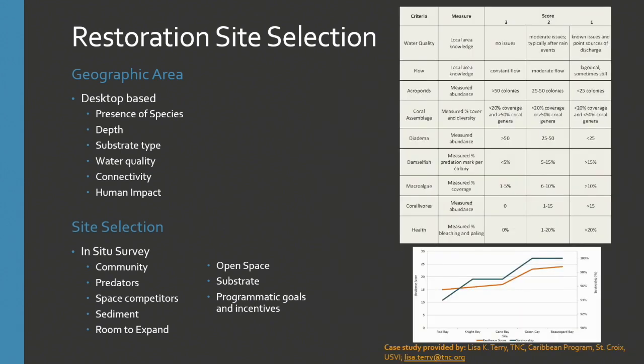Within the guide, we also provide ways to do this — not just telling you what to look at, but providing case studies. This particular case study was done by TNC in the USVI, where they used selection criteria to create what they call a resilience score. In orange is the resilience score and in blue is the success of their restoration — the survival of their outplants. They found a correlation between high resilience score and high outplant success. We provide guidance from this study and a second study showing different ways to evaluate your sites.